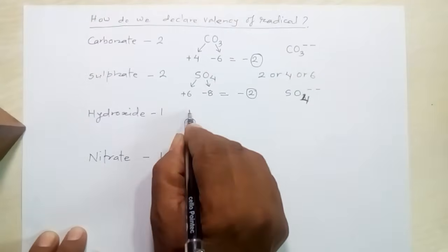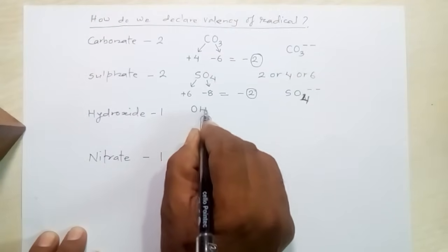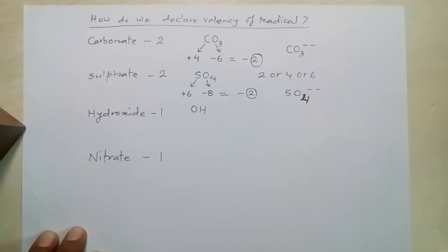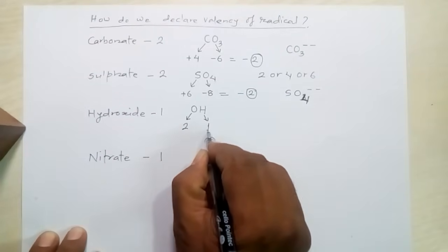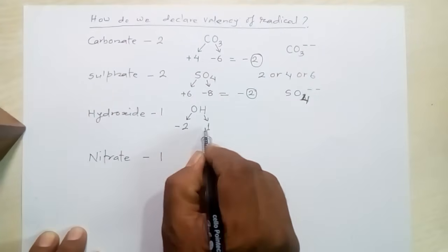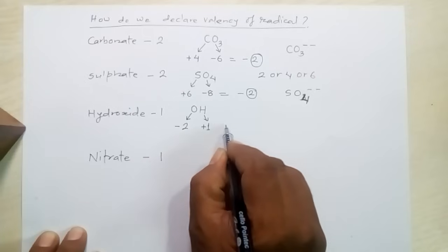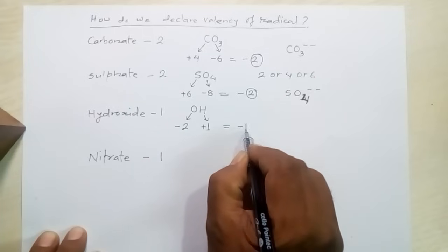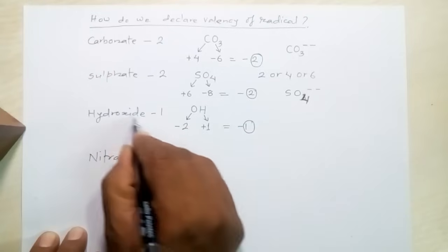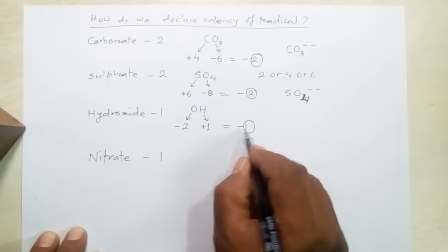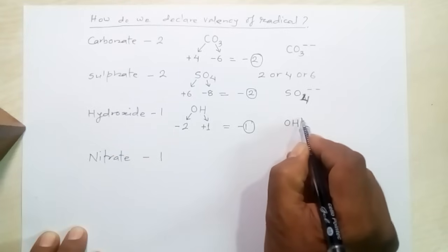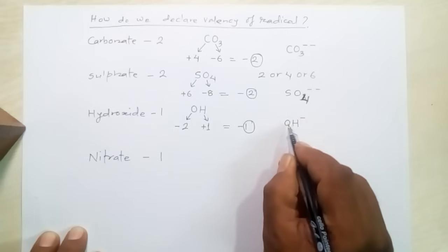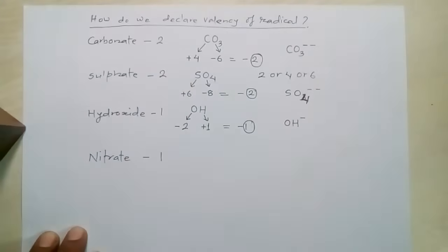Now let's talk about hydroxide. The formula of hydroxide is OH. The valency of oxygen is 2 and the valency of hydrogen is 1. Oxygen is electronegative and hydrogen is electropositive, so the sum is −2 +1 = −1. The valency of hydroxide is 1, and its ion is represented as OH⁻, having 1 excess electron.